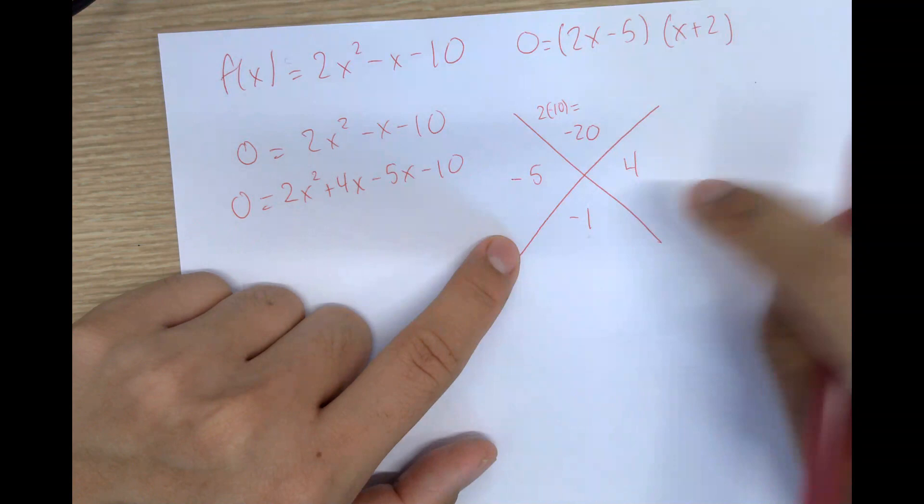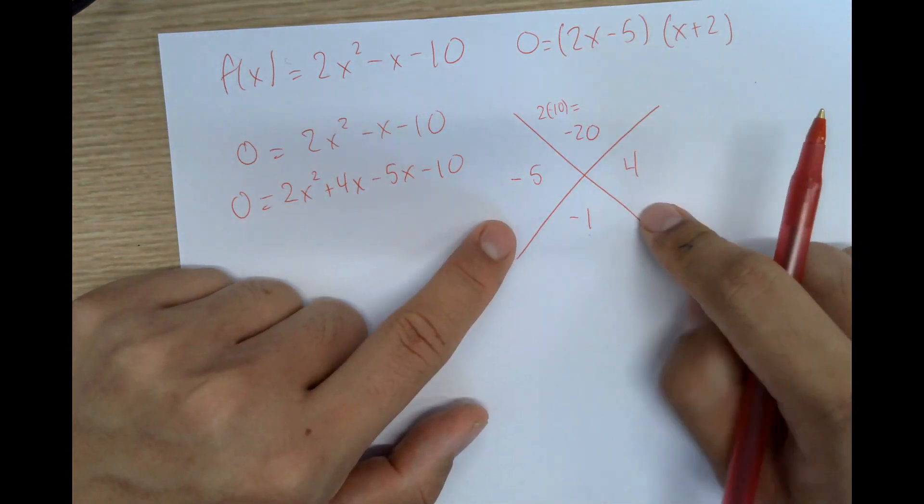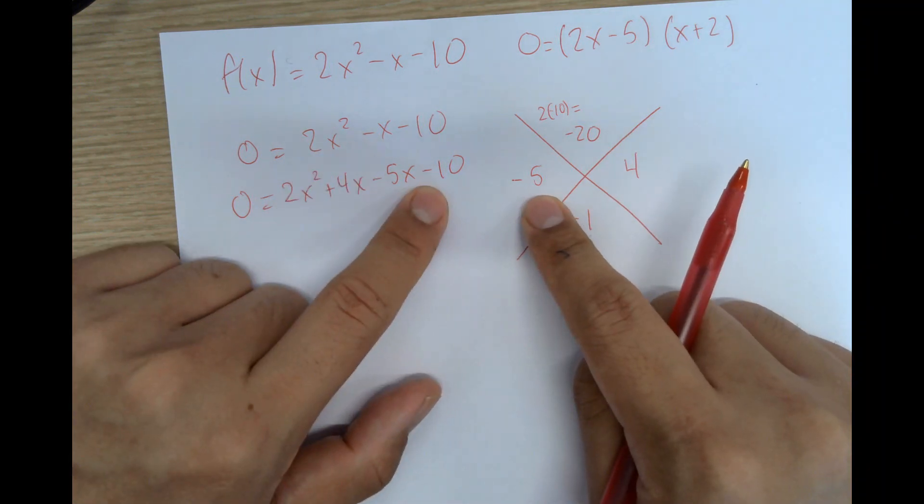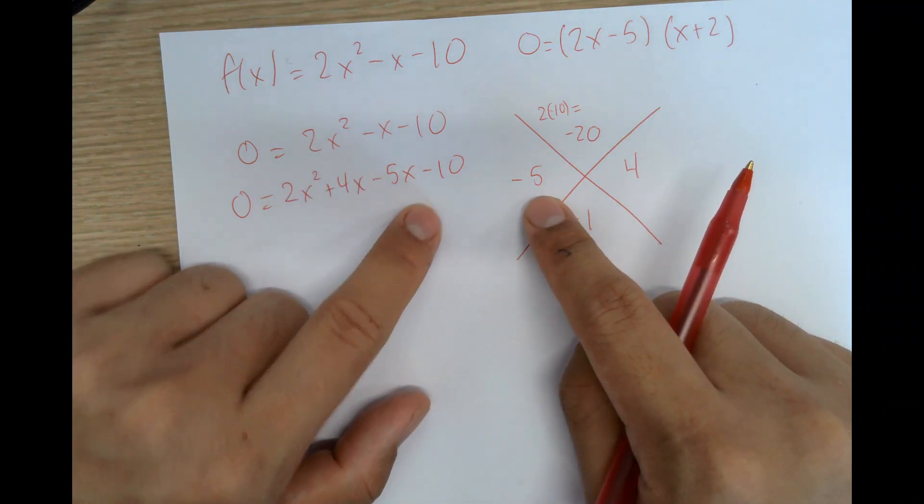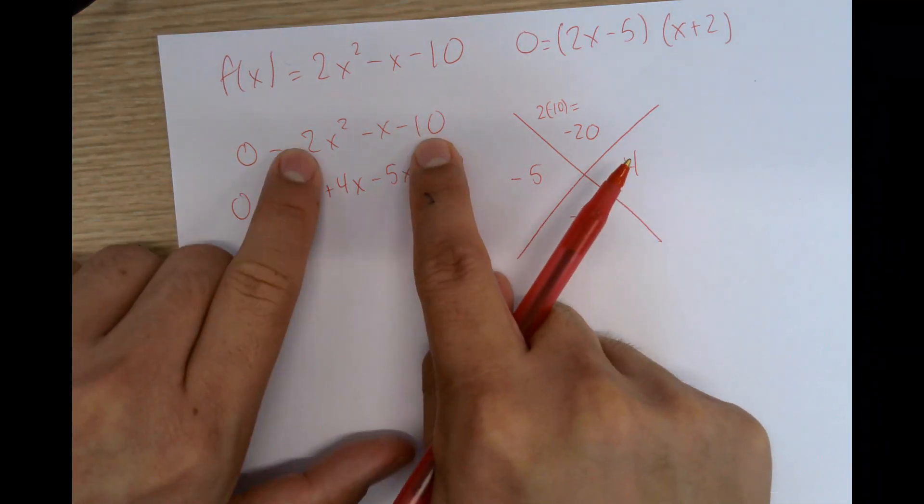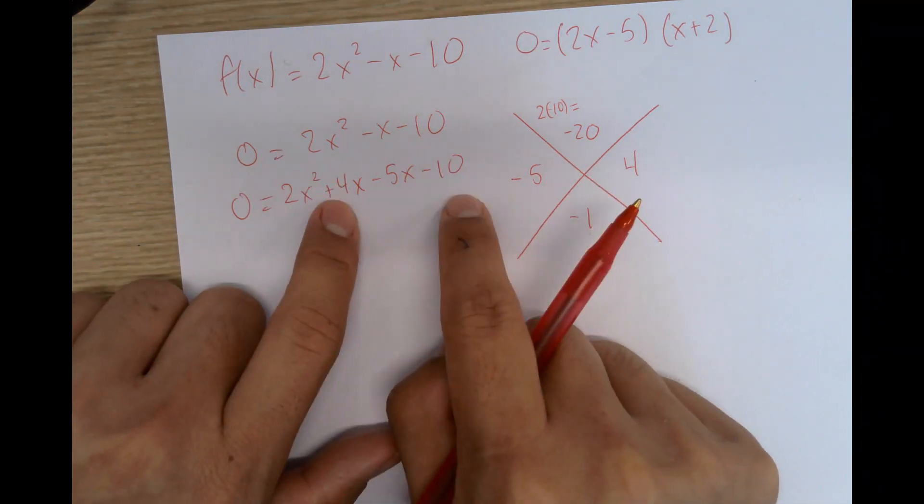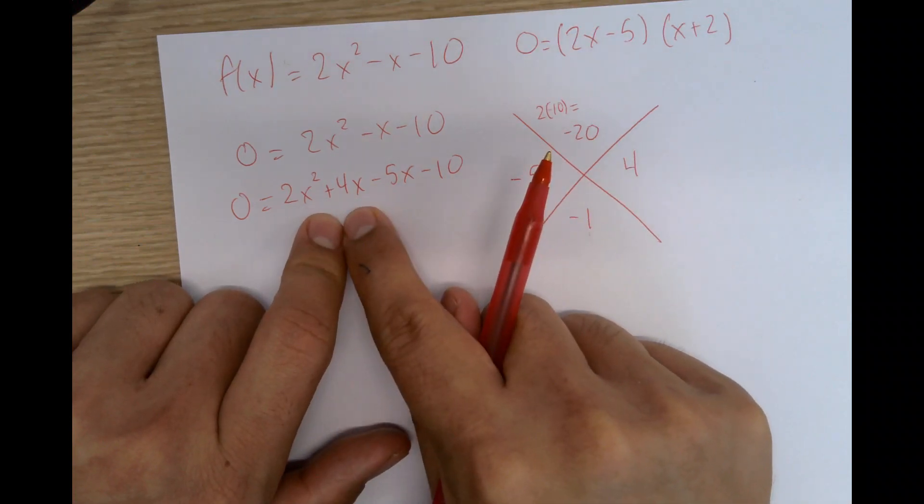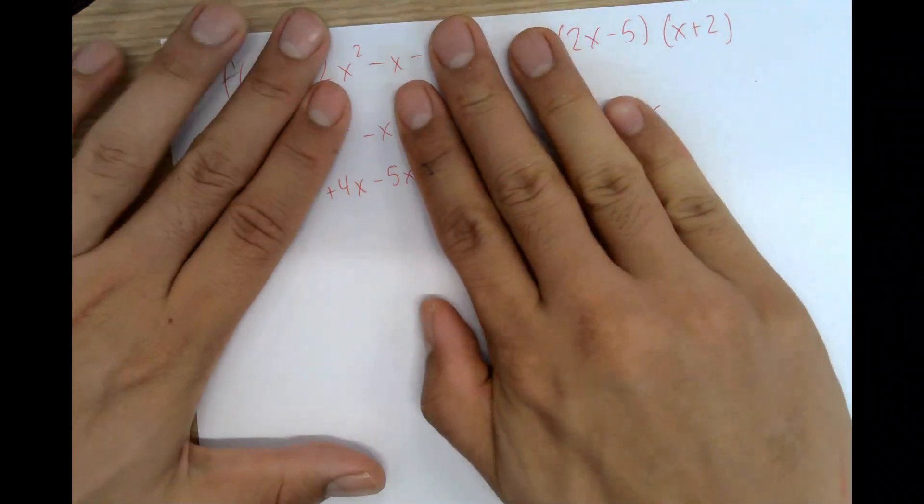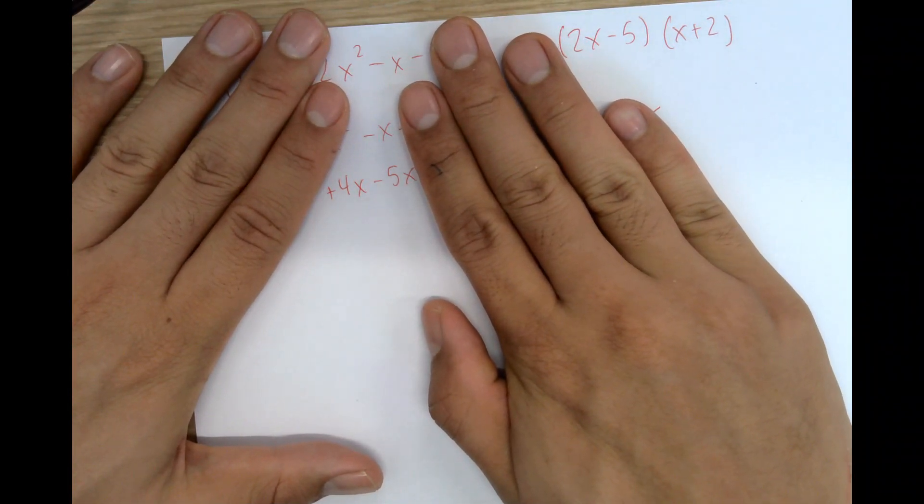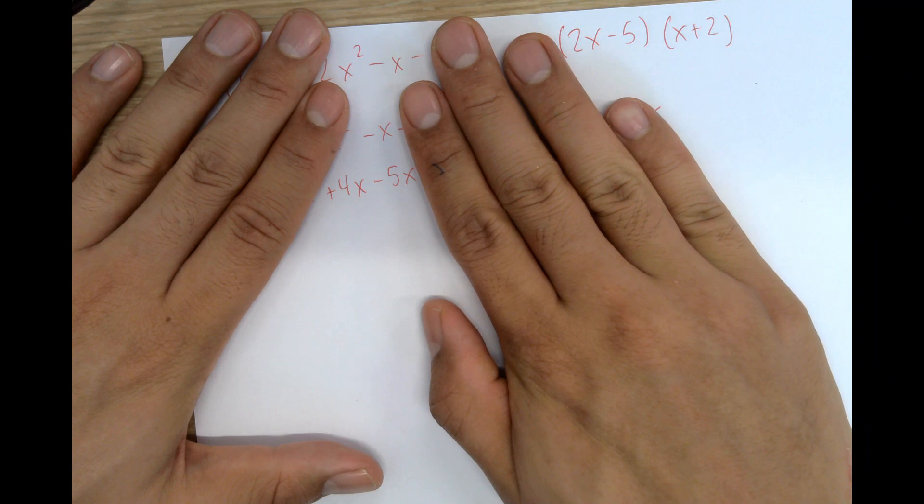The reason I write it in this order is because 4 is divisible by 2 and 5 is divisible by 10. So what I'm doing right now is I'm specifically grouping them with the number that they're divisible by. The reason I can write -5x and positive 4x is because if I just isolate this part, you can see here that -x equals positive 4x minus 5x.